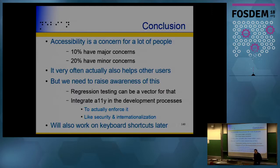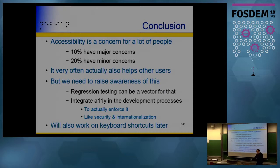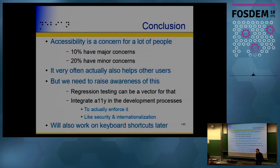To conclude: accessibility is a problem for a lot of people, and it actually helps everybody — shortcuts save time, simpler software benefits all users. We need to raise awareness, and regression testing with a few warnings is a good starting point. The goal is to integrate accessibility into the development process itself, enforced just like security and internationalization. Keyboard shortcuts are also on the roadmap. Thank you.